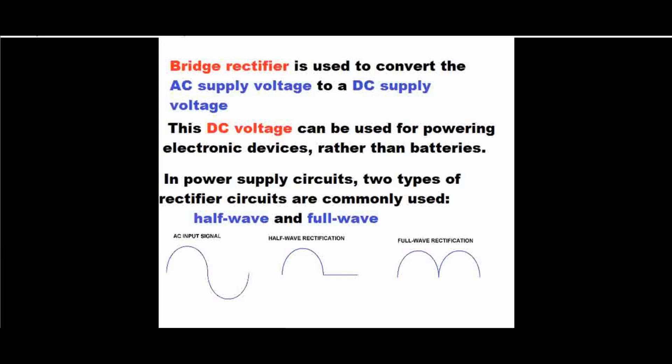In power supply circuits, two types of rectifier circuits are commonly used. We have half-wave and full-wave rectification. This is how half-wave rectification looks like, and this is how full-wave rectification looks like, and this is our AC input signal.